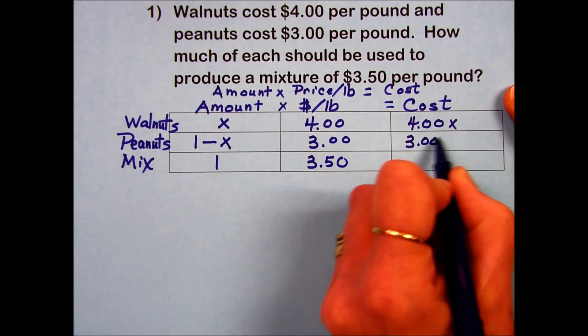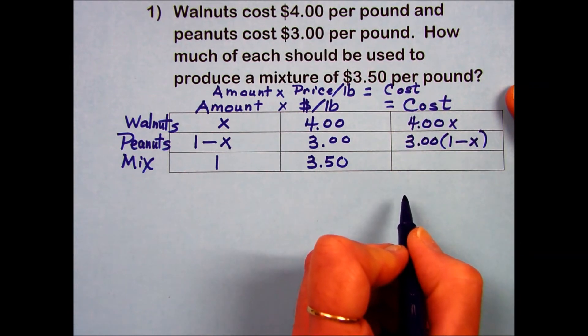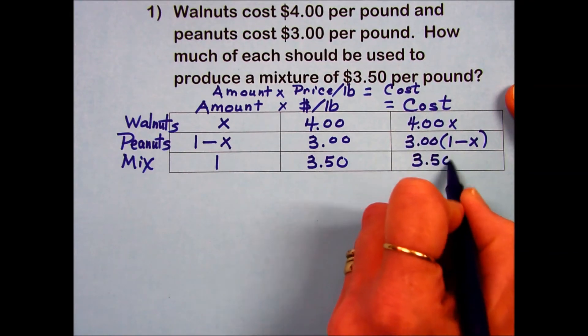$3 times the amount of peanuts, which is the quantity one minus x, and then our mixture which is $3.50 times one, or simply $3.50.